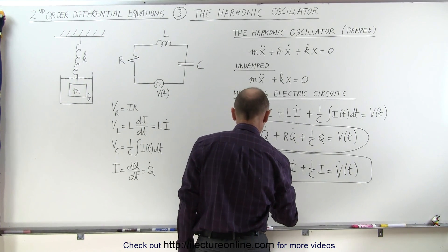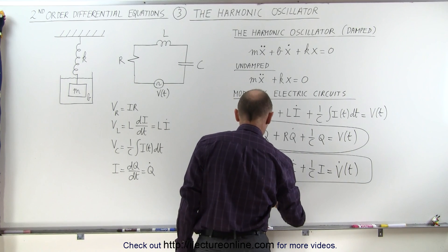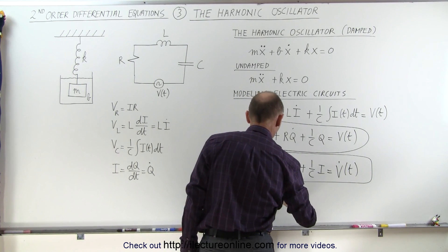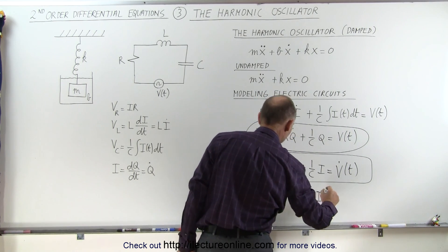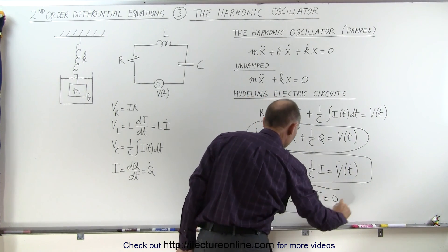What we would have then is we would have something that looks like this, L i double dot, plus R i dot, plus 1 over c times i, is equal to 0, and now we have the homogeneous equation.